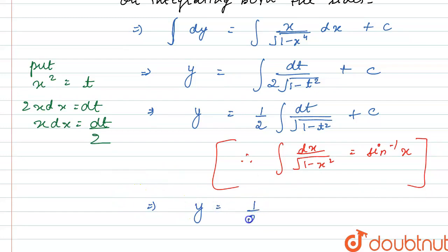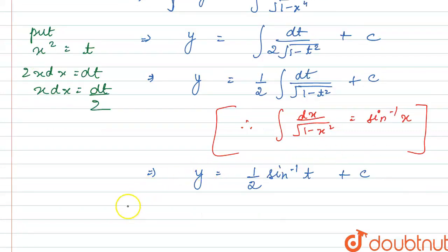So using this thing, this will become y is equals to 1 by 2, and this integral dt divided by root over of 1 minus t square, this will become sin inverse t plus constant c.